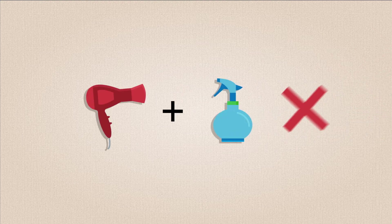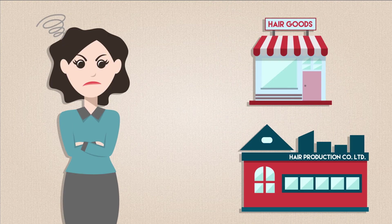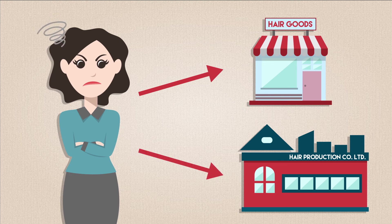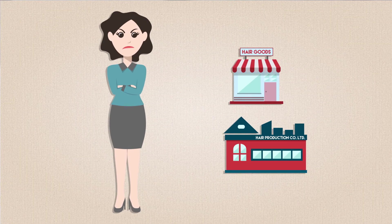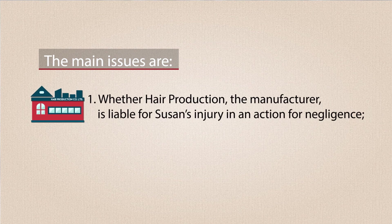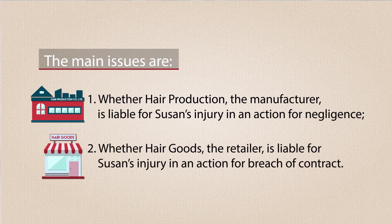Poor Susan suffered serious injuries as a result. One of the weaknesses of the hairdryer was that it could not be used together with anything that contained alcohol. So Susan decided to sue the retailer Hair Goods and the manufacturer Hair Production Company Limited for her injuries. The case involves three possible parties: Susan, the woman who was injured; Hair Goods, the shop which sold the hairdryer; and Hair Production Company Limited, the manufacturer. The main issues are whether Hair Production Company Limited is liable for Susan's injury in an action for negligence, and whether Hair Goods is liable for Susan's injury in an action for breach of contract.